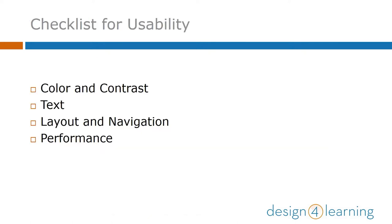In your workbook, we've provided a checklist for evaluating usability of content as you go forward. Here we'll share the different categories in the list and then highlight some examples. Some of these features relate to individual pieces of content, but some relate to the environment through which the content is shared. Right now we'll focus only on the former, but remember to consider these in the course management and capstone modules as well.